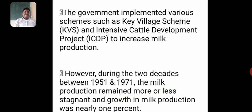The government implemented various schemes such as the Key Village Scheme (KVS) and the Intensive Cattle Development Project (ICDP) to increase milk production. However, during the two decades between 1951 and 1971, milk production remained more or less stagnant, with growth in milk production of nearly only one percent.